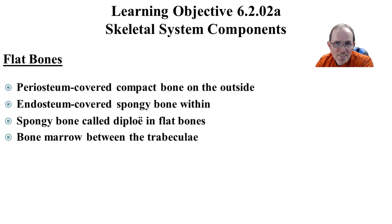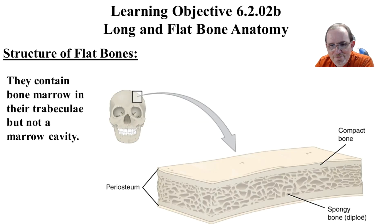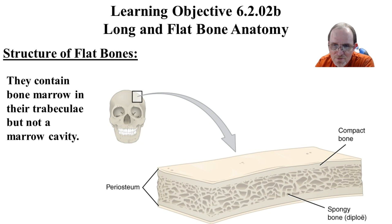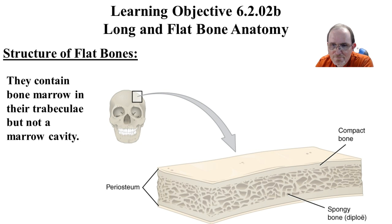Periosteum is on the outside; endosteum lines the inside. In flat bones like the skull, the spongy bone between the two compact bone layers is called diploë. The bone marrow is between the trabeculae. Flat bones have bone marrow but don't have a marrow cavity as such — the diploë is it.